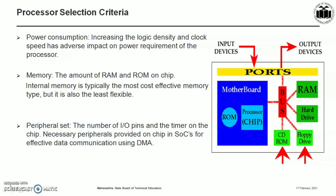The next criteria is memory. For storing data we need data memory, and for storing code we need program memory — that is, the amount of RAM and ROM, both on-chip and off-chip. Internal memory is typically the most cost-effective but least flexible. The microcontroller with the least amount of memory to fit the application is typically selected, though care must be taken when predicting code size since an increase in code size might require a different microcontroller.